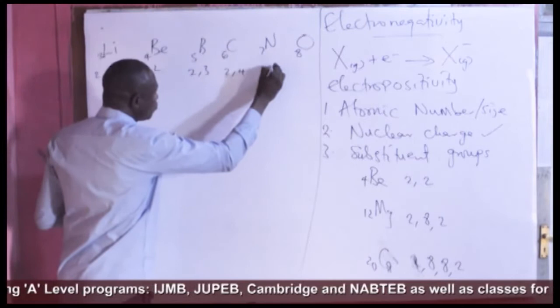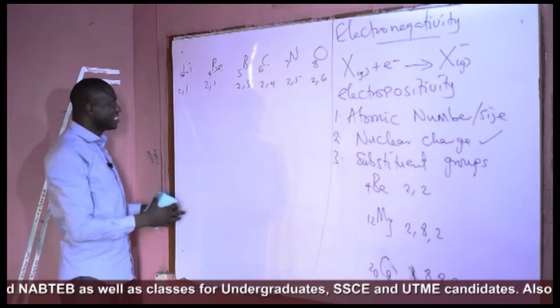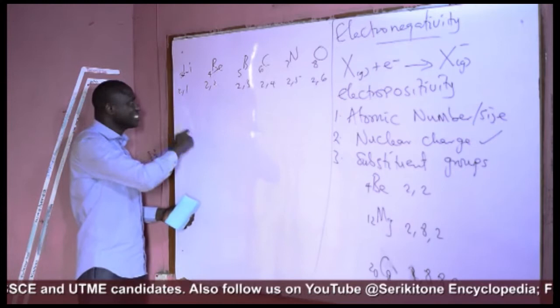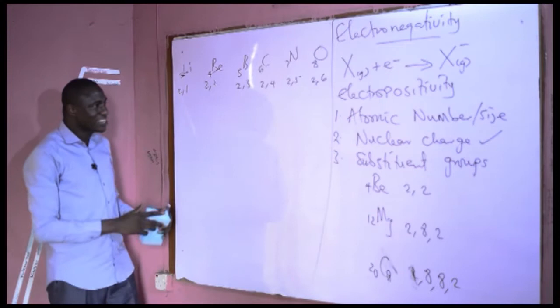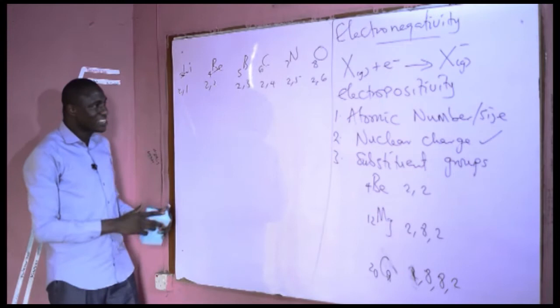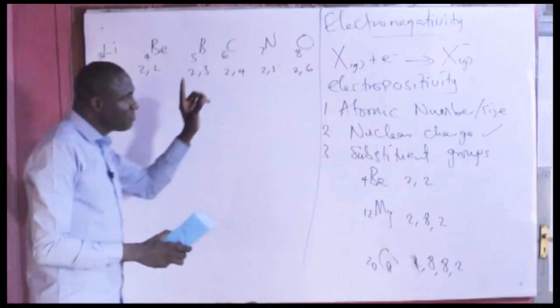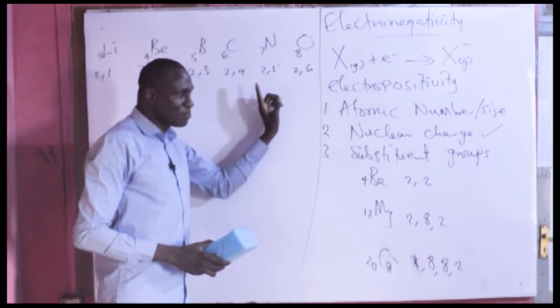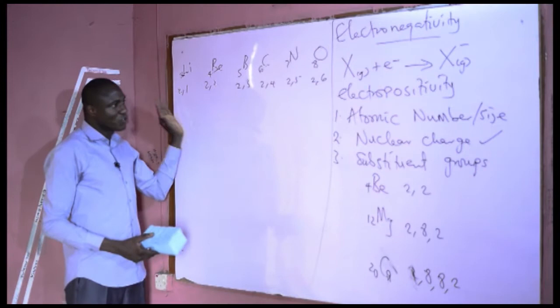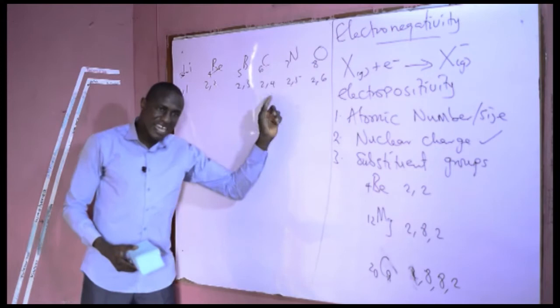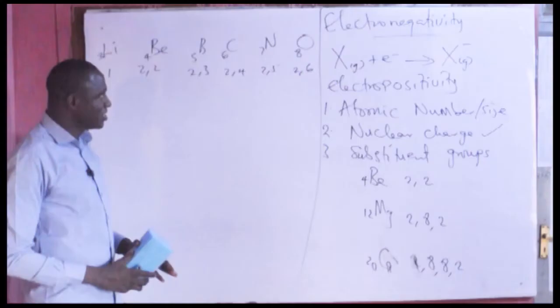As you go across the period, there is an increase in atomic number, an increase in nuclear charge, and also an increase in the number of electrons in the valence shell. In oxygen, the atomic number is 8, nuclear charge is 8, and the number of valence electrons is 6 — higher than nitrogen, which is higher than carbon. As a result, the size of the atom tends to decrease, and the electrostatic force of attraction between the nucleus and the electrons increases. This increase in nuclear grip thereby increases the electronegativity of the atom.